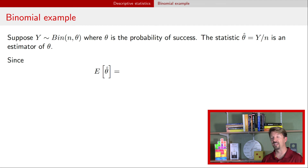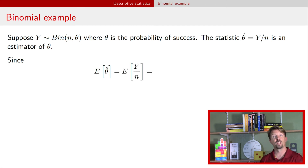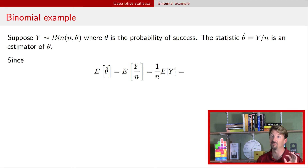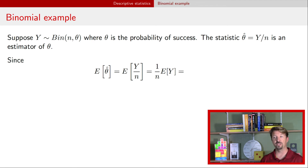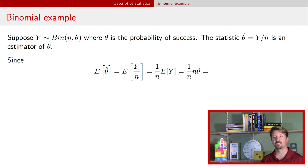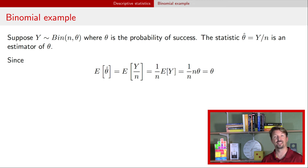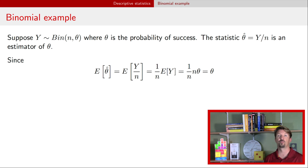We need to calculate the expectation of our estimator. We plug in the definition: that's y divided by n. We pull out the 1/n outside of the expectation, giving 1/n times the expectation of y. For a binomial distribution, the expectation of y is n times theta. The n's cancel and we just get theta. Therefore, this y/n estimator is an unbiased estimator of the population parameter theta.